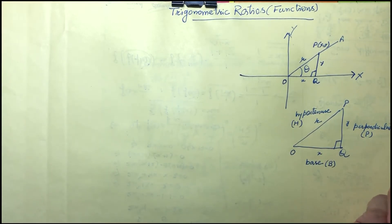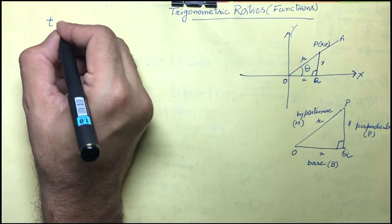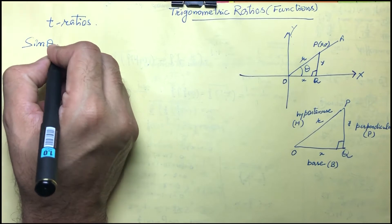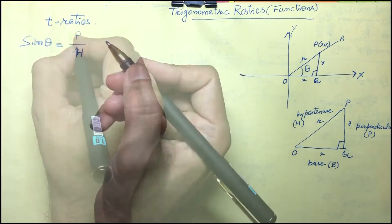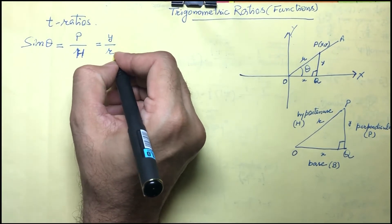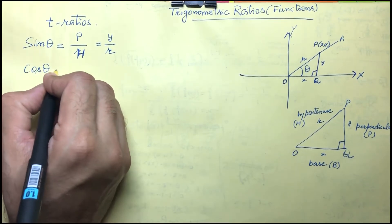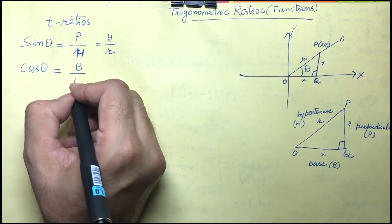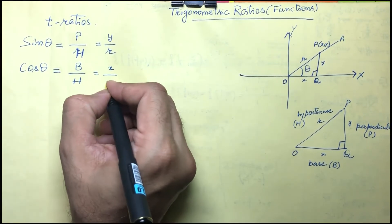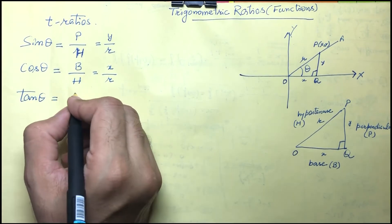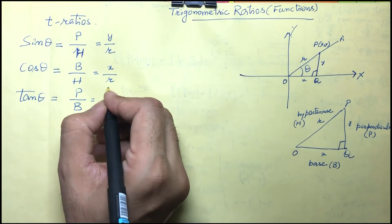With these notations we write the values of trigonometric functions, or T-ratios. Sin theta equals perpendicular upon hypotenuse, that is y upon r. Cos theta equals base upon hypotenuse, that is x upon r. Tangent of theta equals perpendicular upon base, y upon x.